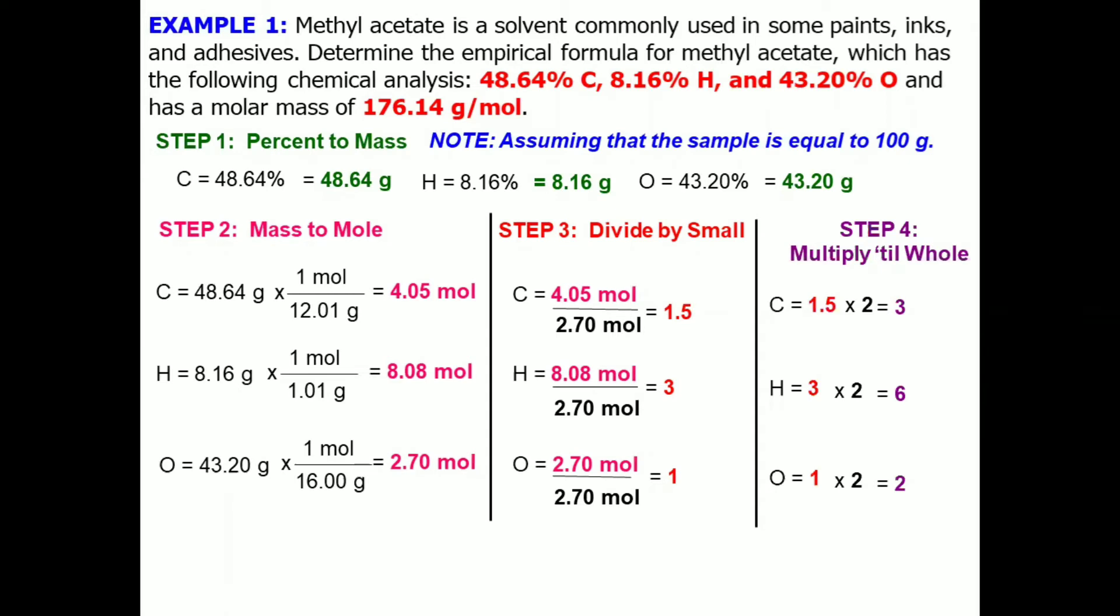With this, we get the subscripts for our formula. And our empirical formula for methyl acetate again is C3H6O2.